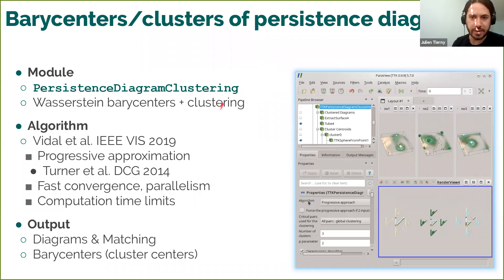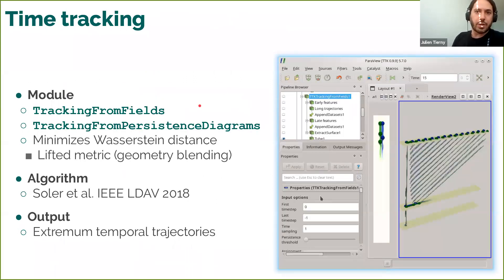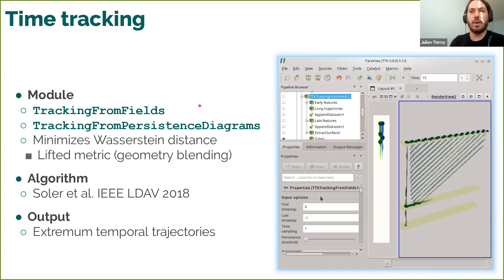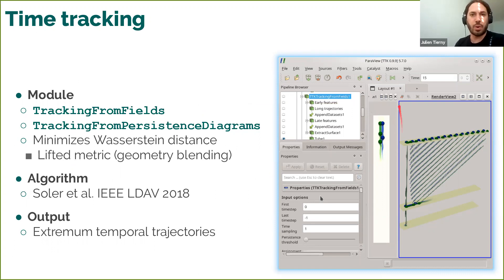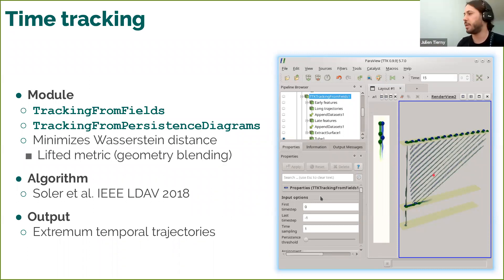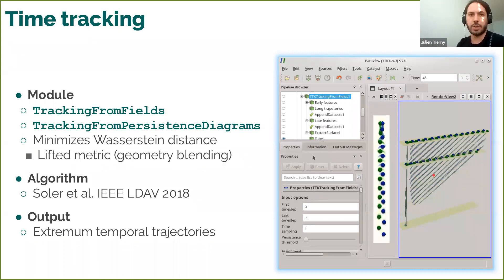Based on these assignment solvers, you can also implement algorithms to track features over time. Here is a 2D flow example where time is given by the vertical component, and vortices in the flow are tracked with trajectories computed by solving optimal assignments between consecutive time steps — shown at the beginning, towards the middle, and towards the end of the sequence.